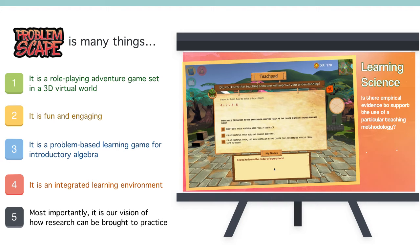But most importantly, it is our vision of how research can be brought to practice, and I would like to show you some examples of how we use research in design. When we develop an activity, we look at learning science research to see if there is empirical evidence to support a particular teaching methodology.